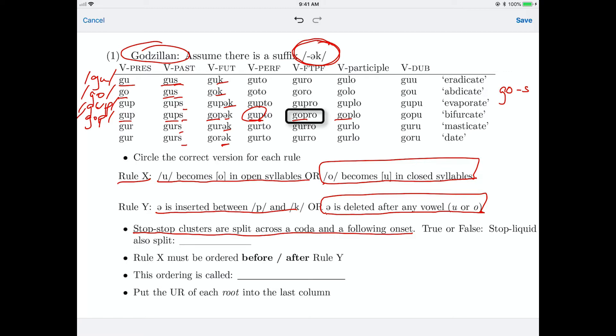But here, notice that the o did not become a u. So that suggests that the syllabification is go plus pro, or go plus plo. So are stop-liquid clusters split? The answer is that's false, because the syllabification of go pro must be something like g-o-p-r-o. There's an open syllable here. The o is in an open syllable, so it doesn't become a u, because it's not in a closed syllable.